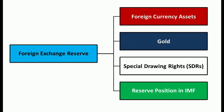The first one is the foreign currency assets which includes foreign currencies, investment in foreign bonds, treasury bills, deposits with foreign central banks, etc. The second one is the gold reserves which are passively managed by Reserve Bank of India and account for around 9% of India's total foreign exchange reserves. The third one is the special drawing rights or SDR, which is the international reserve created by the International Monetary Fund or IMF, allocated as per member countries' quota at IMF. And the last one is the reserve position in IMF, which is the reserve where India can draw upon to purchase other foreign currencies from funds.